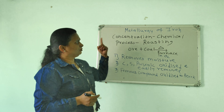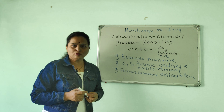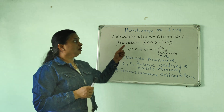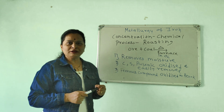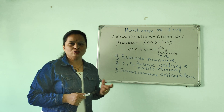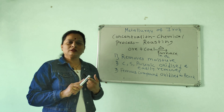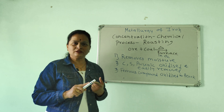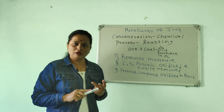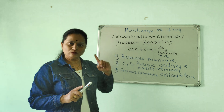Now let's move on to the concentration by chemical process. The chemical process used for hematite ore is roasting. There are two chemical processes: calcination and roasting. We only use roasting for hematite ore.